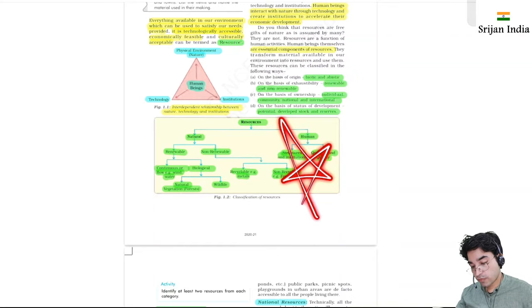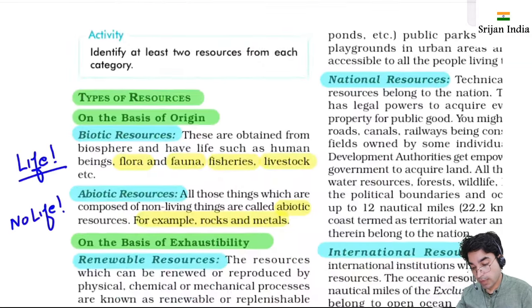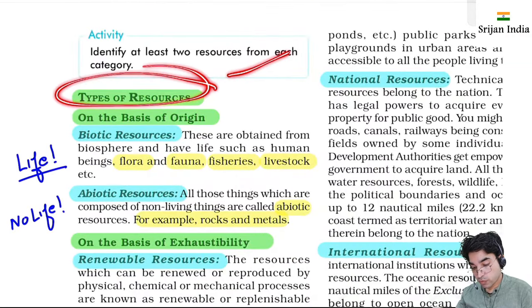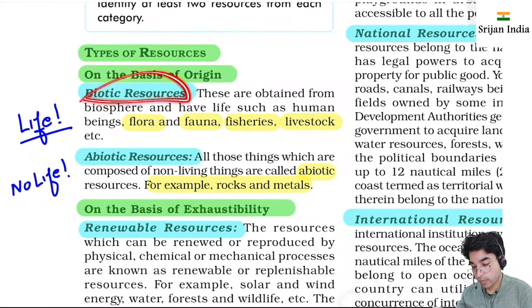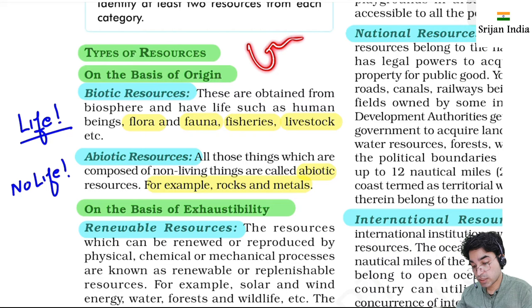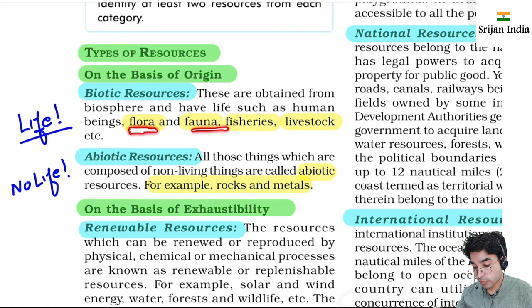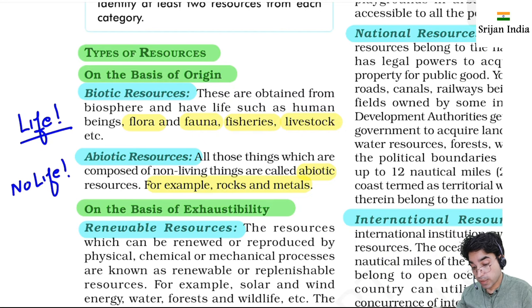This is the classification of resources. Now, types of resources in detail - on the basis of origin. One is biotic resources - obtained from the biosphere, having some connection with life, meaning they are living. Biotic resources are flora, fauna - flora means plants and all, fauna means animals - fisheries, and livestock like sheep, goats, cattle.